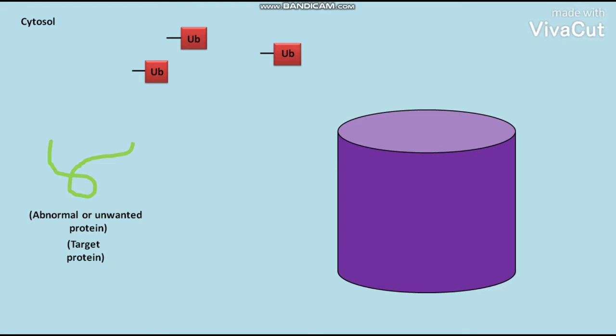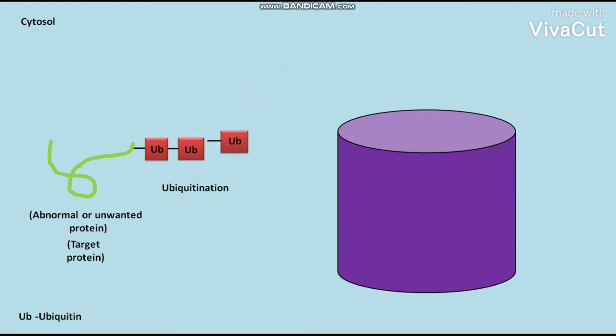To these target proteins, ubiquitin proteins are attached. The process of ubiquitin attachment to the target protein is called ubiquitination.